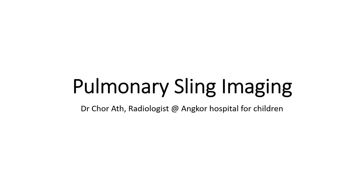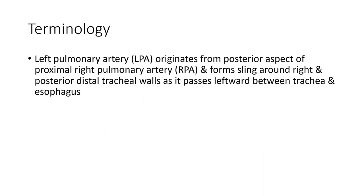Hello everyone. Today I'm going to show you about pulmonary sling. Terminology: the left pulmonary artery originates from the posterior aspect of the proximal right pulmonary artery and forms a sling around the right and posterior distal trachea wall as it passes backward between the trachea and esophagus.